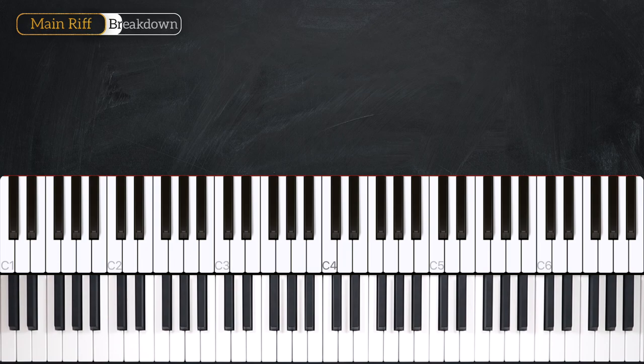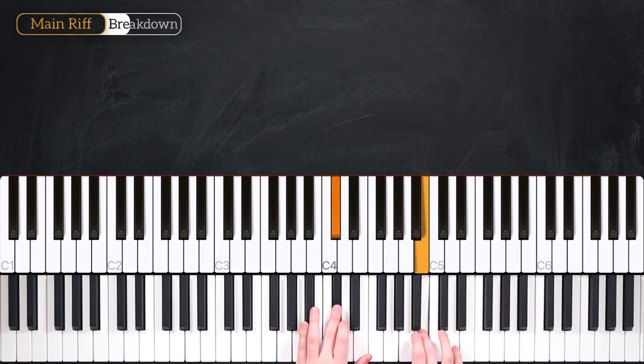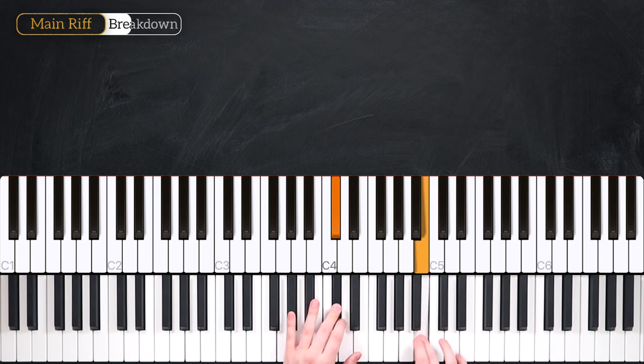Now let's look at the left hand. We're going to start for four beats on an E. So we're going to go 1, 2, 3, 4. Then we're going to go down to a C sharp in the left hand. 1, 2, 3, 4.